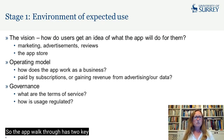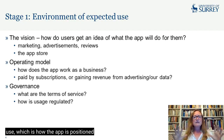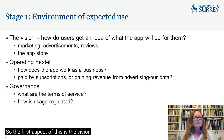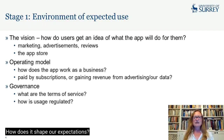The app walkthrough has two key stages. In the first stage, we're looking at the environment of expected use, which is how the app is positioned for us and how the app is positioned as a business. The first aspect of this is the vision of the app — how do users get an idea of what an app is going to do for them and how does it shape our expectations?